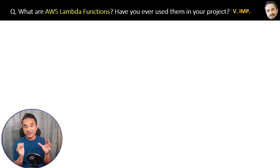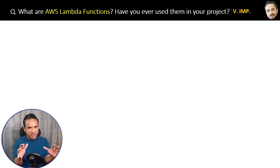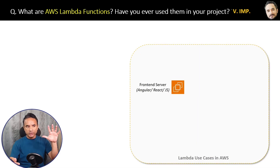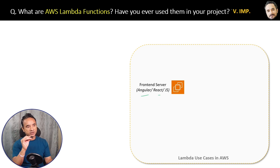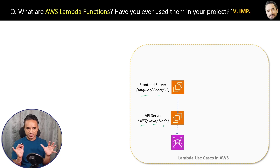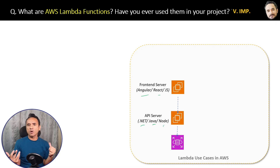What is an AWS Lambda function? Have you ever used one in your project? It's a very important question from an interview point of view. Let's understand with the help of an example. Suppose you are a developer and your team has created a web application in AWS. You have a front-end server built in Angular or React.js, which passes requests to a back-end or API server in .NET, Java, or Node. Everything connects to a database. The front end and back end can be hosted on EC2 instances or using Elastic Beanstalk.